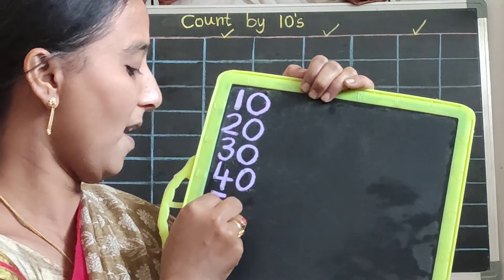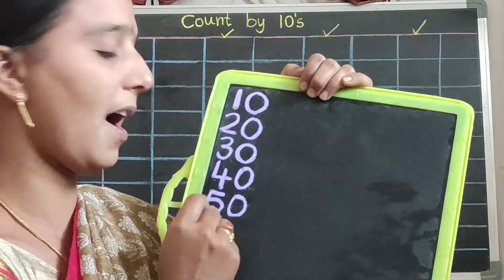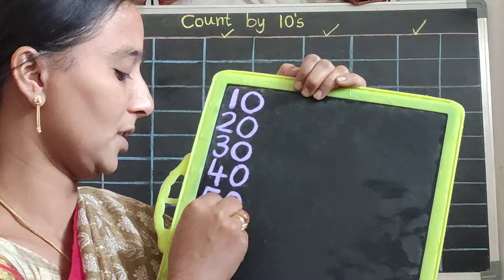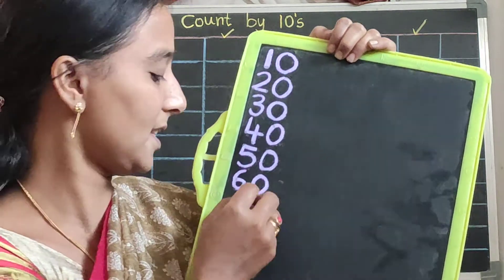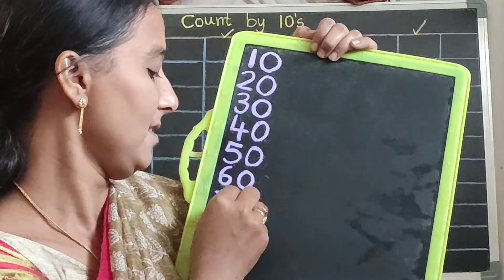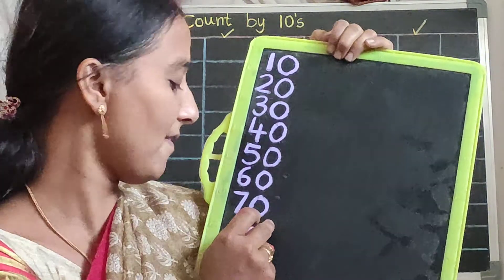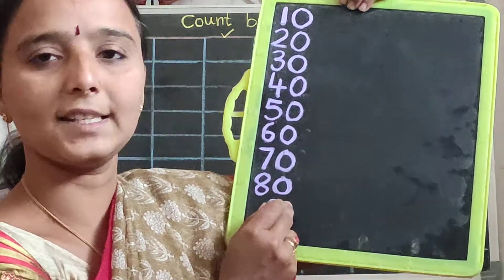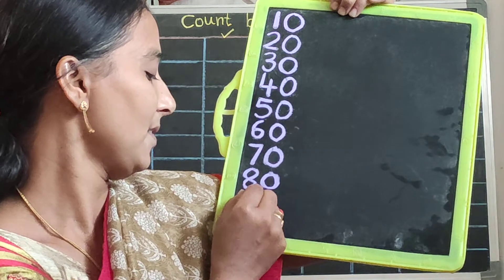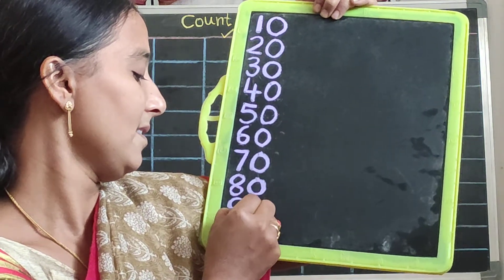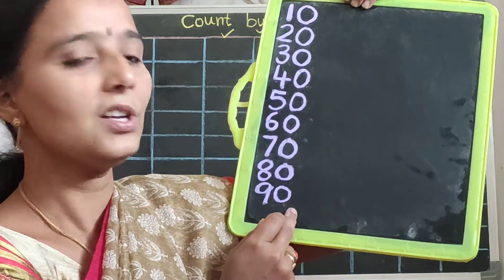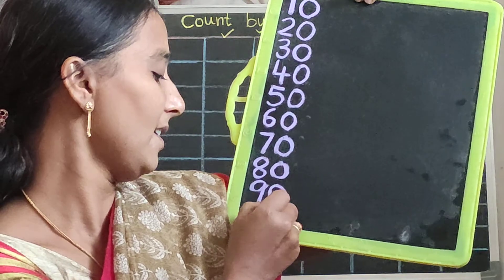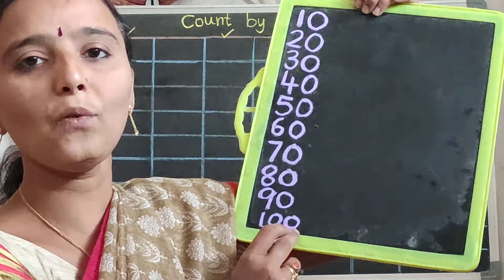Write the number five, then write the zero — five, zero, fifty. Write the number six, then zero — six, zero, sixty. Write the number seven, then zero — seven, zero, seventy. Write the number eight, then zero — eight, zero, eighty. Write the nine, then zero — nine, zero, ninety. Nine after, write the ten — one, zero, zero — one hundred.